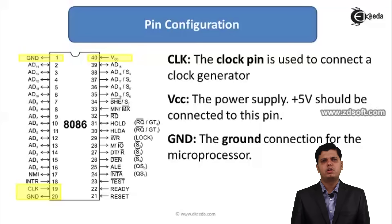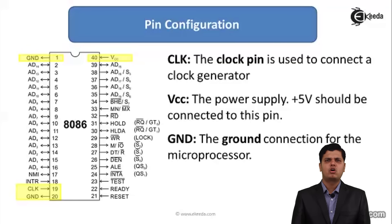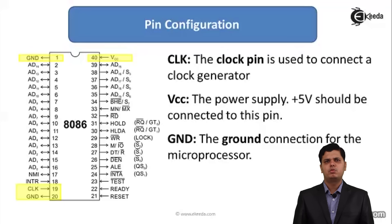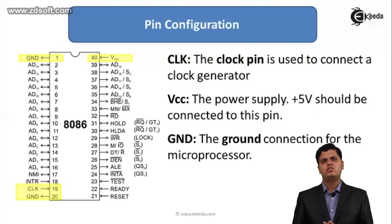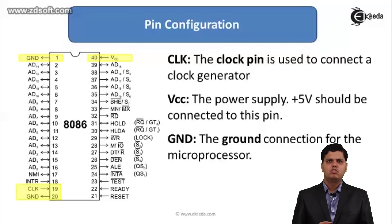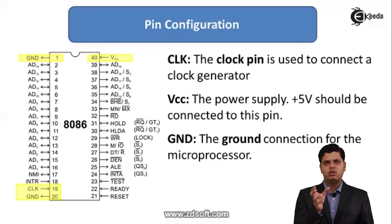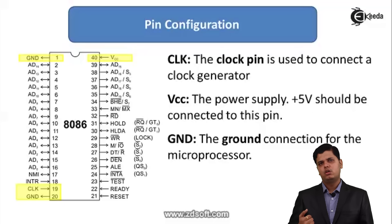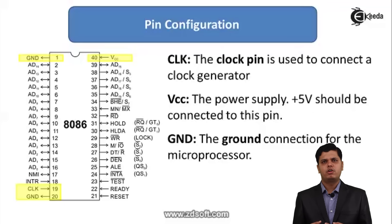The next three important signals are clock, VCC, and ground. Without clock, VCC, and ground, no processor can work. The 8086 is a digital device made from synchronous logic and needs a clock to work. A clock generator connected in the system provides the clock input to the 8086. VCC provides the 5-volt supply and ground is connected for the ground reference.